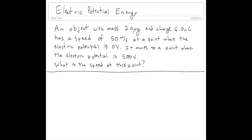Okay, let's do an example involving electrical potential energy. We have an object with a mass of 2 micrograms and a charge of 5 nanocoulombs. It has a speed of 50 meters per second at a point where the electric potential is 0 volts, and it moves to a point where the electric potential is 500 volts. We want to know what is the speed at that point.